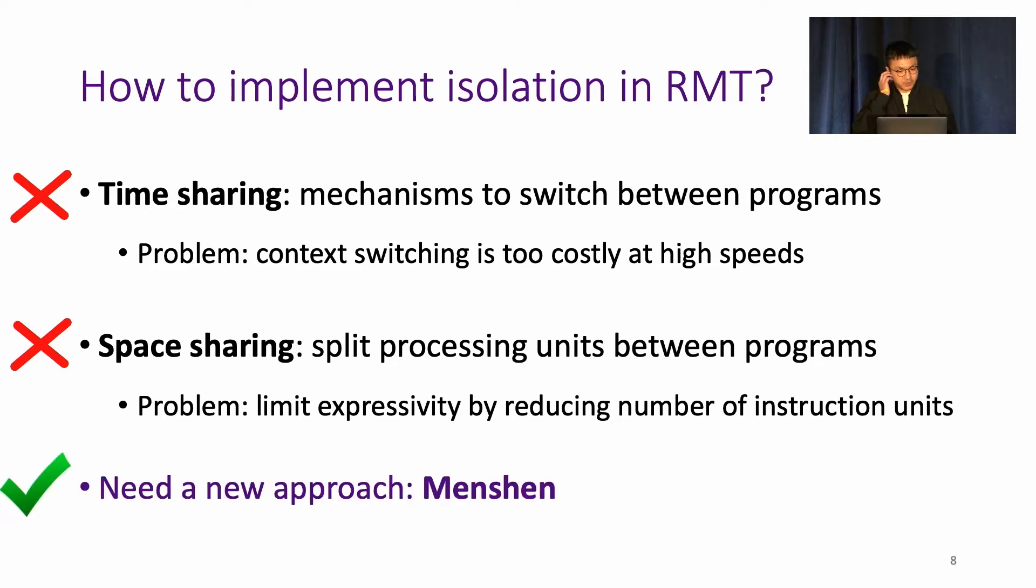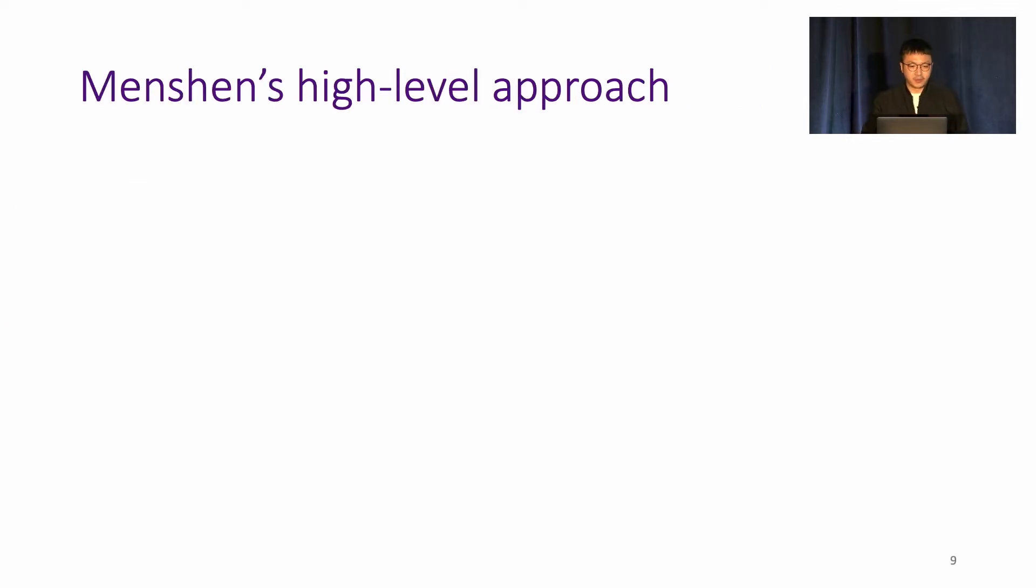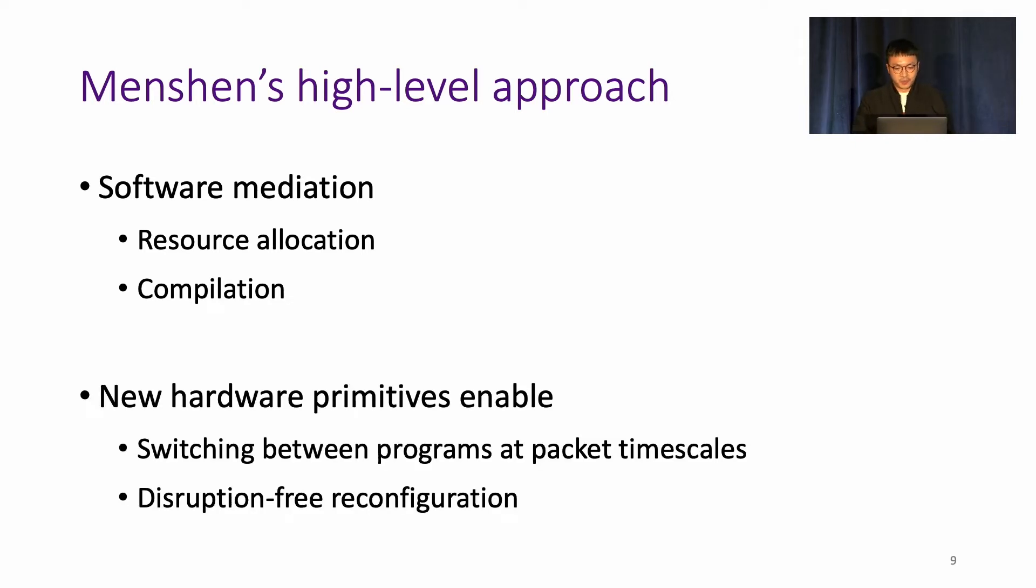To this end, we may need a new approach, and Menshen is our proposal to this question. At a high level, Menshen consists of two main parts. The first one is the software part. The software deals with tasks such as resource allocation, and it also decides which program can or cannot be run on the allocated resources through compilation. Second, Menshen introduces new hardware primitives to meet the isolation requirements we listed before. With this newly introduced hardware and primitives, we can achieve program switching at packet time scales, and these hardware primitives enable disruption-free reconfiguration.